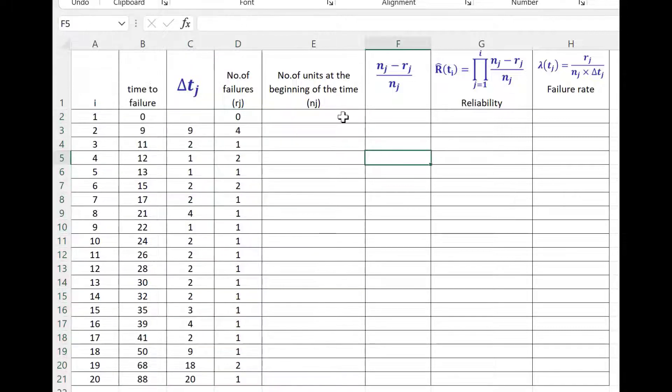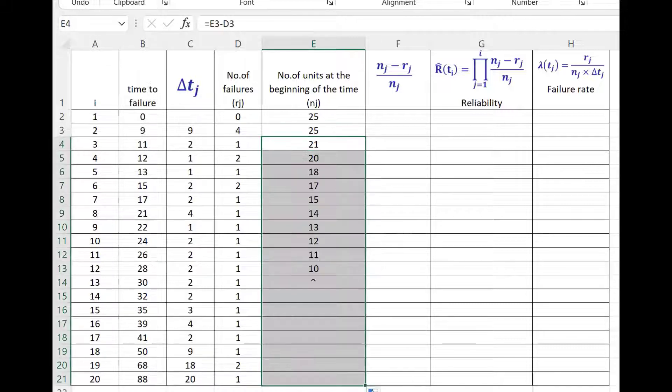Number of unit at the beginning of a particular time interval at 0 time, we start with 25 units. And here also, just prior to this step, the nj will still be 25 because we are talking about just prior to this time. But for the next interval, it will be 25 minus number of failures in the previous step, that is 4. So I can copy this formula and I can say that the last point will be 1.